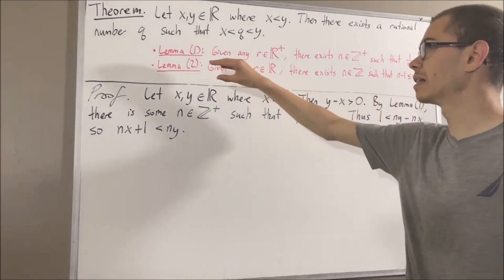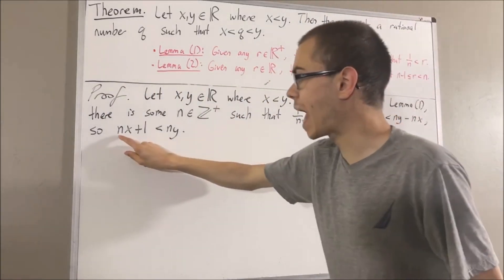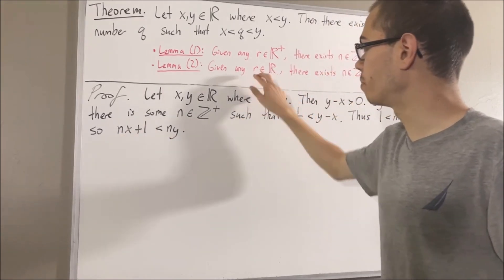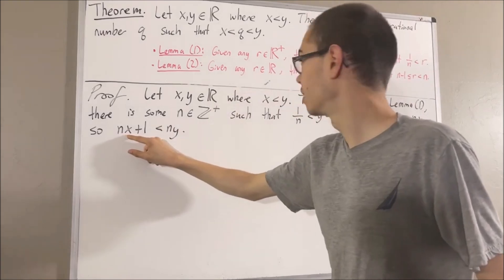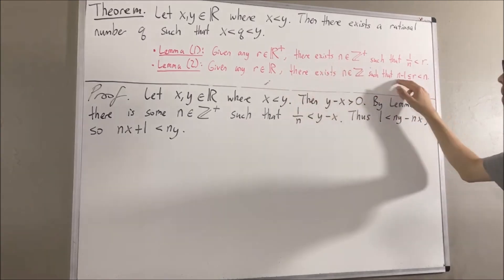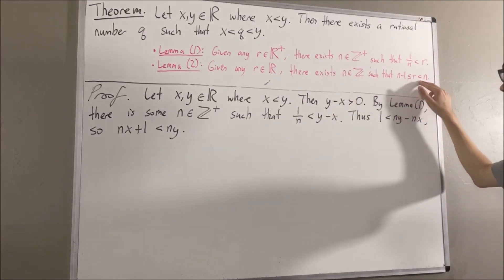And next, we're going to apply lemma 2 to nx. If we do that, we're going to take r to be nx. Well then, there is some integer I'll call m such that m minus 1 is less than or equal to nx, which is less than m.